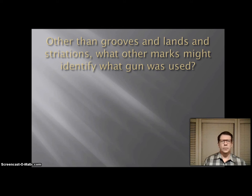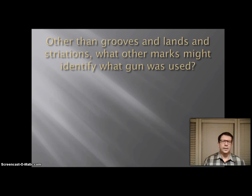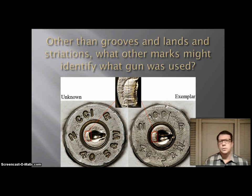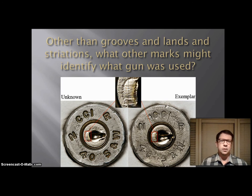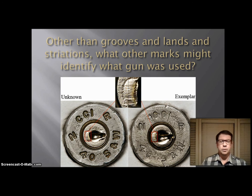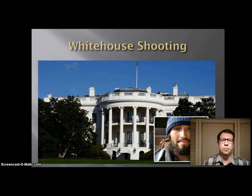Other than grooves, lands, and striations, what other marks might identify what gun was used? When you look at a cartridge, the firing pin makes a tiny mark right there on the primer core. That little mark can also be used — it creates microscopic striations too — and that mark can sometimes be used to identify an individual gun using the cartridge instead of the bullet. So that can be an individual mark as well.